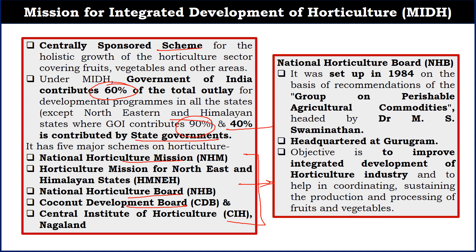Let's discuss the National Horticulture Board. It was set up in 1984 on the recommendation of a group on perishable agriculture commodities, and the head of that group was M.S. Swaminathan. The headquarters of the National Horticulture Board is in Gurugram. The objective of this board is to improve the integrated development of the horticulture industry and to help in coordinating and sustaining the production and processing of fruits and vegetables.